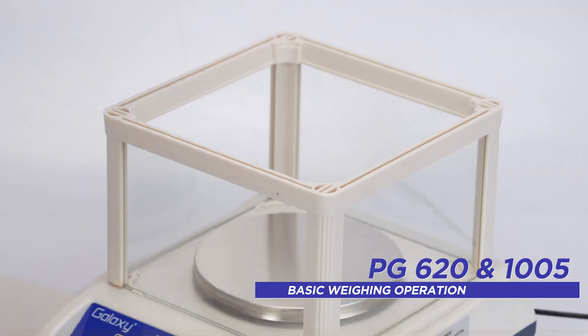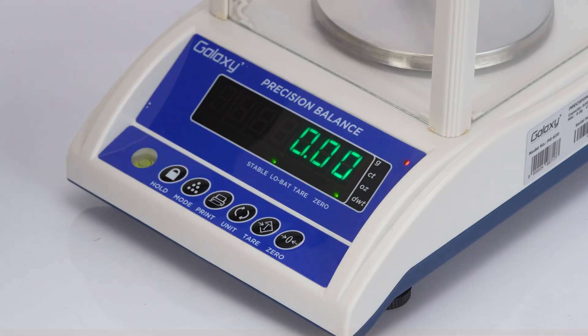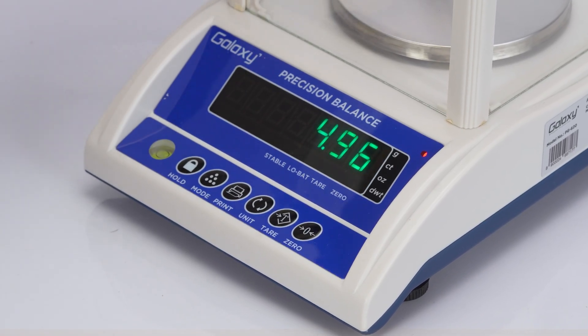To weigh metallic items, place your silver chain on the pan and wait for the stable indicator before reading the weight.